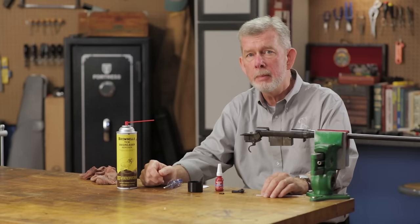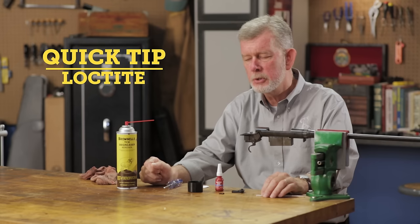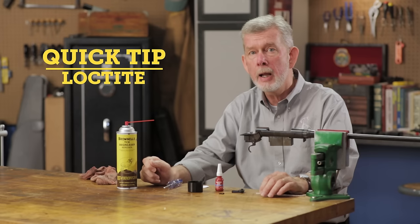Now some people make the mistake of just putting a little Loctite on, putting the screws in, and going on their merry way. But that can be a mistake because a lot of times both your screws and your action threads have oil on them, and that keeps the Loctite from doing its job.